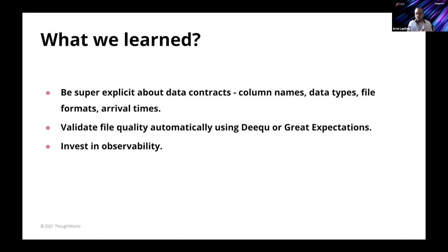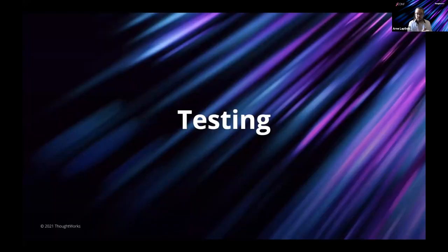What we learned from this: we have to be very explicit about our data contracts — starting from column names, data types, file formats, and even arrival times. We also learned it's very valuable to have automatic tools in place, such as DQ or Great Expectations, that automatically check data quality and whether data contracts are fulfilled. Logging and investing in observability is also critical, both in pre-production environments when developing these systems and especially in production.